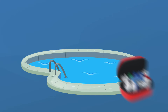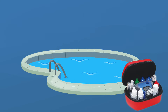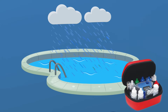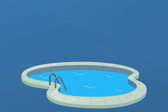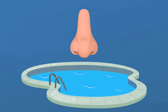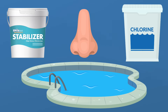Secondly, test your pool water right after a major rainstorm. Diluted water can also result in lower cyanuric acid levels. And finally, if you notice a strong chlorine smell in your pool, that can be a sign that there's actually too much cyanuric acid affecting your chlorine. So check your chlorine and your cyanuric acid levels.